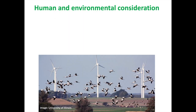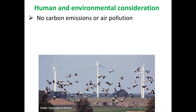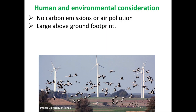Now that we've discussed how and where wind energy is converted to electricity, let's consider the human and environmental impacts of wind energy. Wind energy is renewable and it produces no air pollution or carbon emissions after construction, but it does create a large above-ground footprint and must be located away from buildings. However, land underneath can still be farmed and grazed, making land-based wind farms best for development in rural areas. They also require adequate transmission capacity to cities where the power is used.